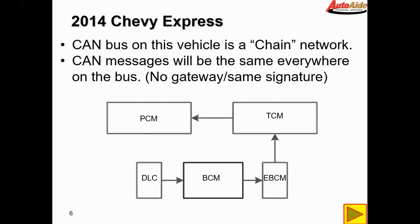In this particular vehicle the CAN bus is set up in what we call a chain network — one module after another like a chain. With a network like this, if you have a break in one of the circuits, you will lose communication on everything past the break. So the TCM and PCM in that case would lose communication, but you'd still have communication with everything before the break. That does not appear to be happening here — we are losing communication with everything. So I'm not certain we have a break in the wire; I think we have something else causing the network to short out.